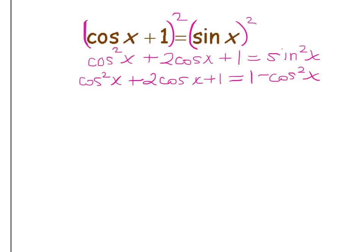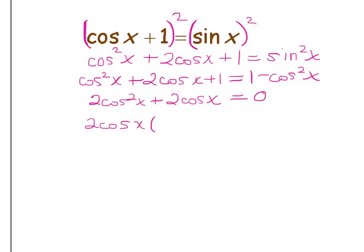Now as I shuffle everything to the left side, preparing to factor, some wonderful things happen. Adding cosine squared to both sides gives two cosine squared x. The two cosine x does not change. Subtracting one from both sides makes the constant term disappear, leaving zero on the right. Looking at two cosine squared x and two cosine x, I have a common factor of two cosine x. Factoring that out leaves cosine x plus one, giving two cosine x times (cosine x plus one) equals zero.